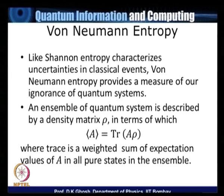What von Neumann did is to generalize this to the case of quantum systems. Like Shannon entropy characterizes uncertainties of classical events, von Neumann entropy provides a measure of our ignorance or uncertainty of the quantum system. Like in Shannon's case, the situation we look at is not that of a pure system, but of an ensemble described by a density matrix.